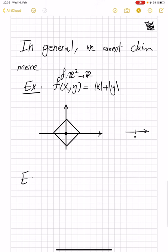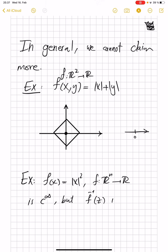Also, we saw in the example of f(x) equal |x|^2, where f goes from R^n into R, is C^∞, but f inverse of z is not an n-1 manifold for a particular point in the image, which is again zero.